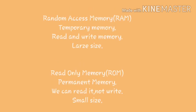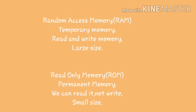Random access memory — RAM — and read only memory — ROM. The difference is that random access memory is a temporary memory, while read only memory is a permanent memory. RAM is read and write memory, whereas ROM we can only read, not write.